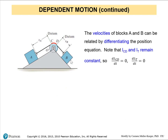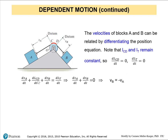To relate the velocities of the blocks, we differentiate the position equation. Since the cord is inextensible, the total length is constant, so its derivative with respect to time is zero. The fixed red section also has zero derivative. Differentiating gives us the derivative of SA plus zero plus the derivative of SB equals zero. Therefore, we can relate the two derivatives and conclude that the velocity of B equals negative the velocity of A.